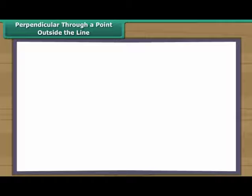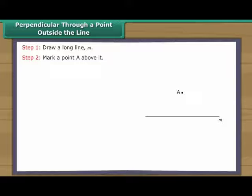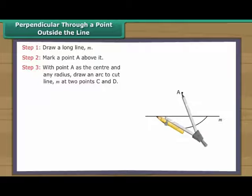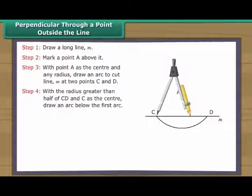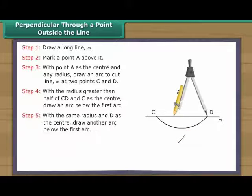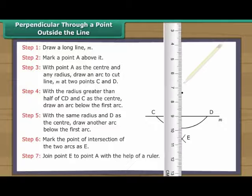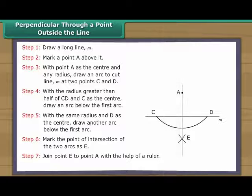Perpendicular through a point outside the line. Draw a long line M and mark a point A above it. With point A as the centre and any radius, draw an arc to cut line M at two points C and D. With a radius greater than half of CD and C as the centre, draw an arc below the first arc. Mark the point of intersection of the two arcs as E. Join point E to point A. AE is perpendicular to line M.